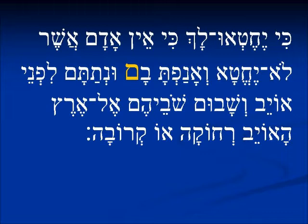M'lachim Aleph, Perek Chet, Pasuk 46 — 1 Kings 8:46: Ki yechet ulach, ki ein adam asher lo yechetha, v'anavtavam, v'netatam lefnei oyev, v'shavum shovehem, el eretz haoyev, v'achaka o'krova. In previous lessons we have talked about different letters being translated as a preposition. In particular here we see the bet, and the bet can be translated as 'with' or 'in.' Here we see the mem suffix attached to it — v'anavtavam — 'and you are angry.' We translate the bet here as 'with,' and the mem suffix means 'with them.' It's a third person, masculine plural.